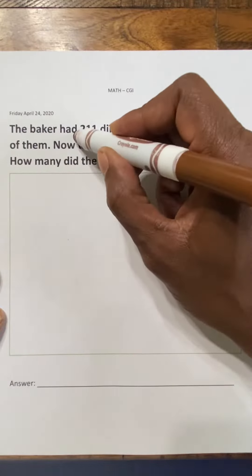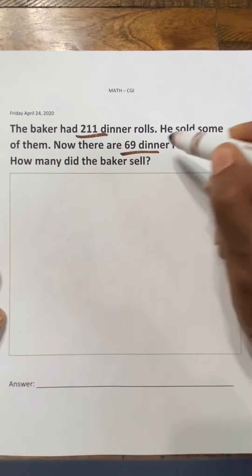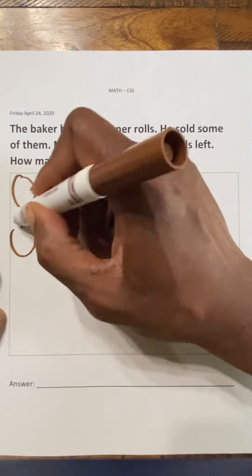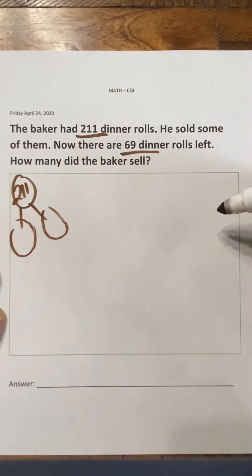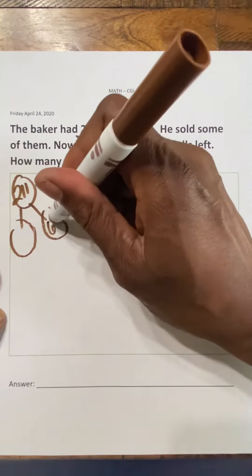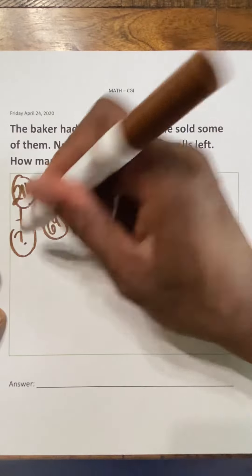The baker had 211 dinner rolls. He sold some of them. Now there are 69 dinner rolls left. Let's organize ourselves. I know the baker started with 211. It says it right there. And he has 69 left. That means we're missing a part.